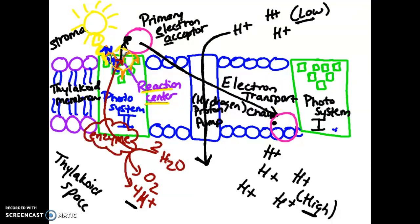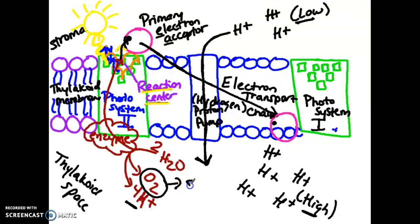As the primary electron acceptor bypasses the hydrogen pump, the electron supplies the energy to pump a hydrogen from the low-concentration stroma to the high-concentration thylakoid space. To replenish the lost electrons, an enzyme at the base of photosystem 2 catalyzes two water molecules into oxygen and four hydrogen ions. Those hydrogen ions lost their electrons, which are drawn into the reaction center. The oxygen produced is released from the plant through structures called stomata.